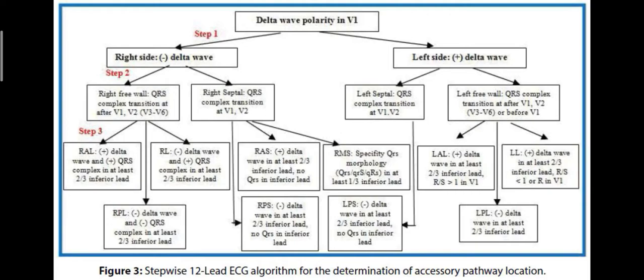Left posterior lateral pathway: all leads are negative and transition is after V3. Left posterior septal: transition is early with absolutely negative QRS and delta wave. For the right side — LBBB morphology in V1 confirms right pathway. Transition after V2-V3 = right free wall pathway. Transition at V1-V2 = right septal pathway. If delta wave and QRS are negative in at least two of three inferior leads, it is a posterior pathway. Late transition = right posterior lateral; early transition = right posterior septal.